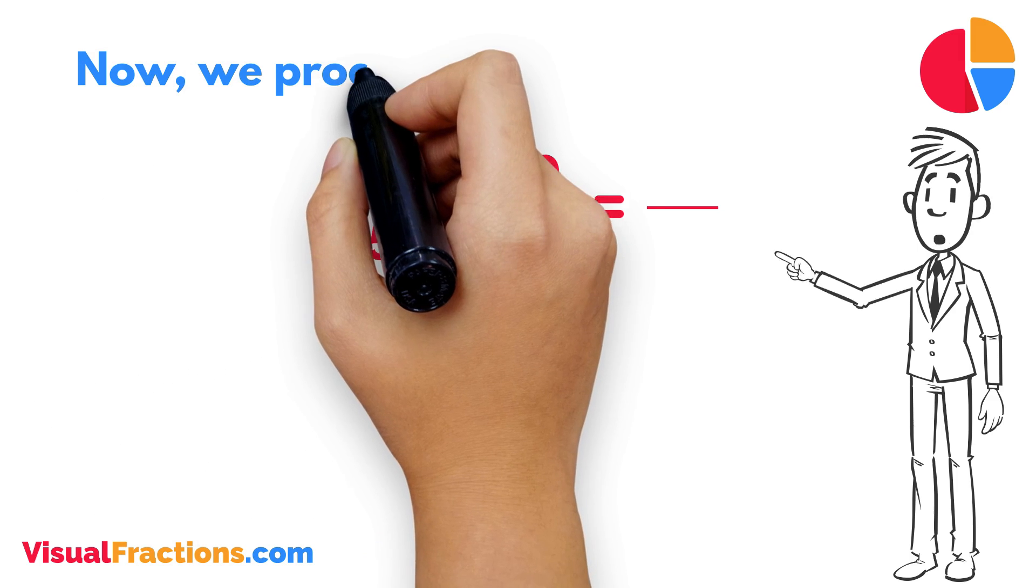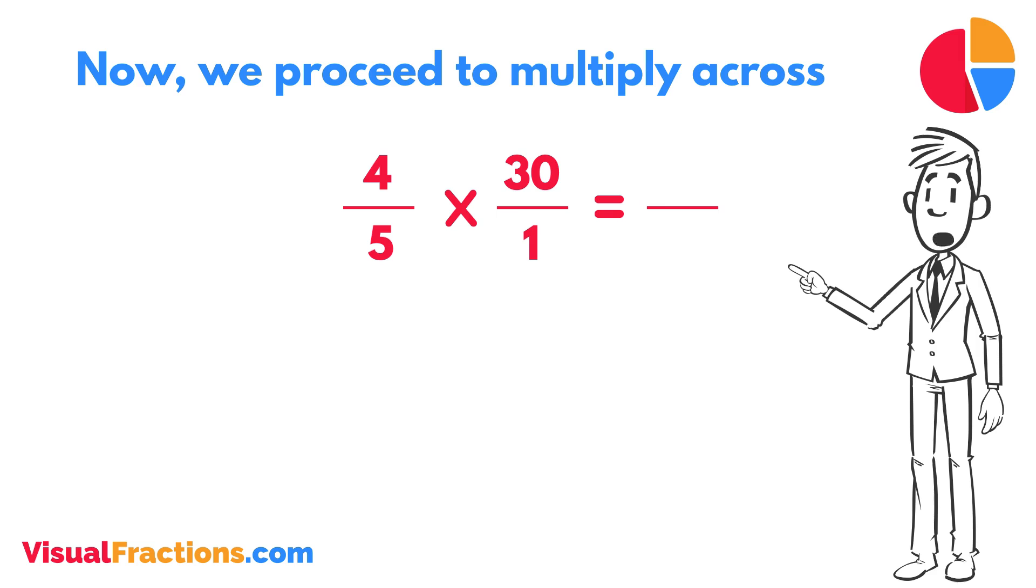Now, we proceed to multiply across. First, multiply the numerators. 4 times 30 equals 120.